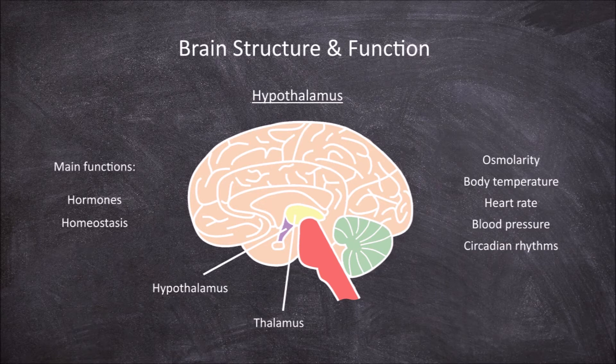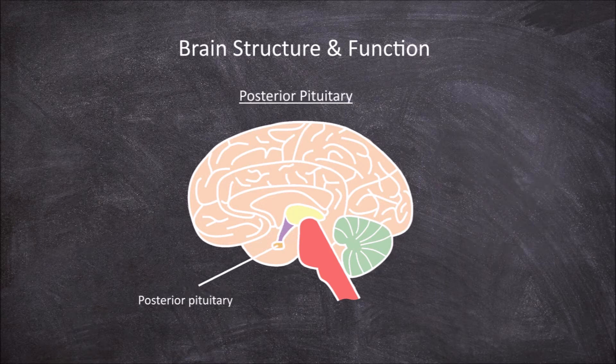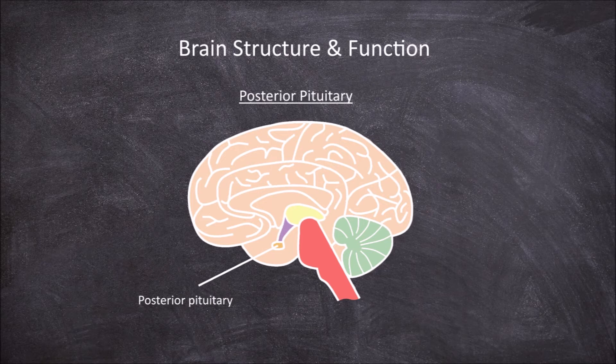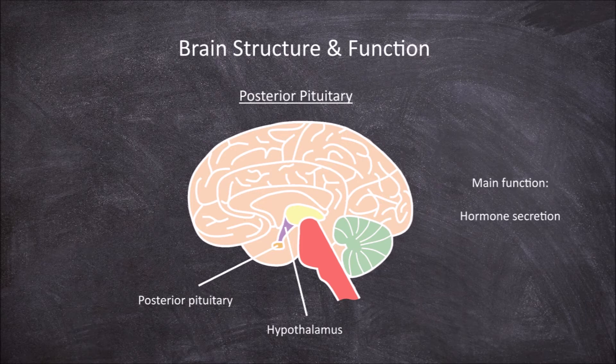The next part of the brain is the posterior pituitary. The pituitary gland is found coming down from the hypothalamus. The function of the posterior pituitary is in hormone secretion from hormones created in the hypothalamus, especially the hormones oxytocin and vasopressin.